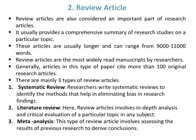Number two type of research article is the Review article. Review articles are considered an important part of research and usually provide a comprehensive summary of research studies on a particular topic. These articles are generally longer, ranging from 9,000 to 11,000 words, and are the most widely read manuscripts by researchers. They typically cite more than 100 original research articles.